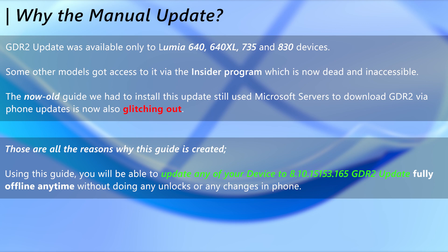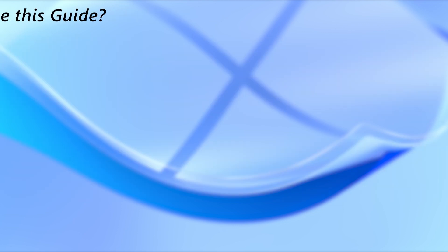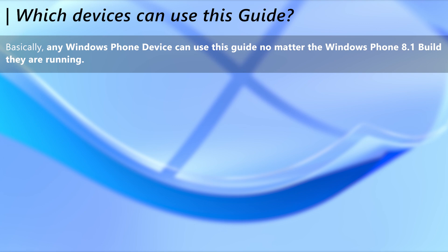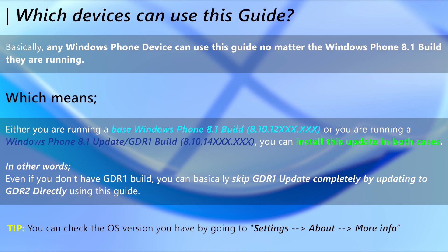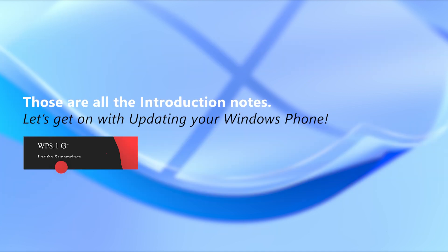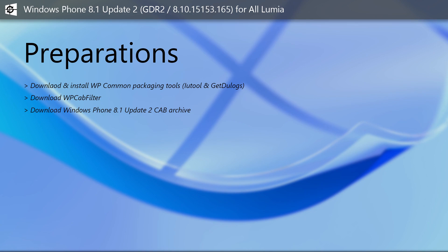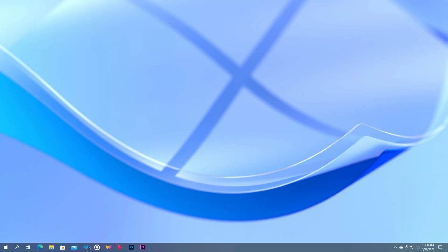Now, which devices can use this update? Any device running any Windows Phone 8.1 build can install this update. The OS version your phone runs is not an issue, as long as it runs at least the base Windows Phone 8.1 OS. That means even if you don't have a GDR1 build in your device, you can still directly jump to GDR2, skipping the GDR1 update. That's about it for the introductions.